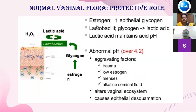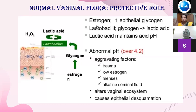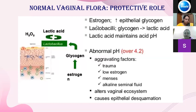Estrogen causes increased epithelial glycogen; lactobacillus breaks glycogen into lactic acid, maintaining the acidic vaginal pH. Abnormal pH greater than 4.2 can occur with any trauma to the vagina, conditions predisposing to hypo-estrogenism, during menstruation, alkaline seminal fluid, alteration in the vaginal ecosystem such as in type 2 diabetes, or any condition causing excessive epithelial desquamation.